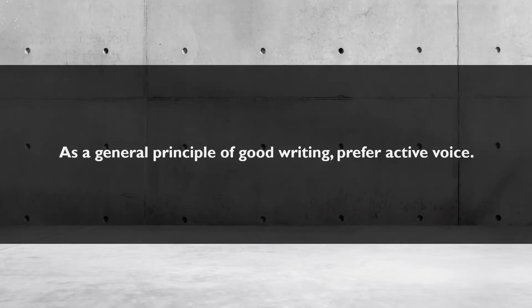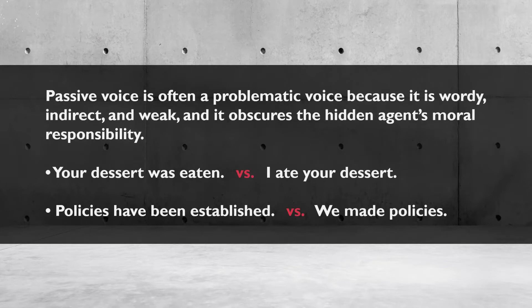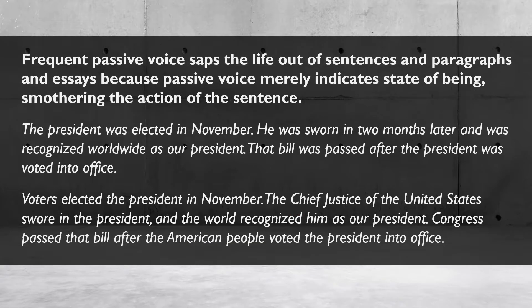As a general principle of good writing, prefer active voice, which often makes sentences easier to follow and helps readers better understand action and agency. Passive voice is often problematic because it is wordy, indirect, and weak, and it obscures the hidden agent's moral responsibility. 'Your dessert was eaten' versus 'I ate your dessert' — which expresses responsibility? See how easily passive voice shifts responsibility off of the one who acted. 'Policies have been established' versus 'we made policies' — which expresses responsibility and which demonstrates irresponsible bureaucracy?